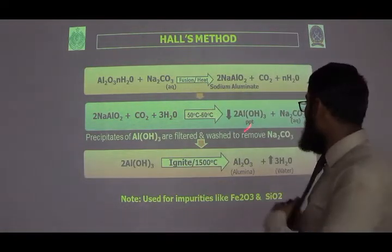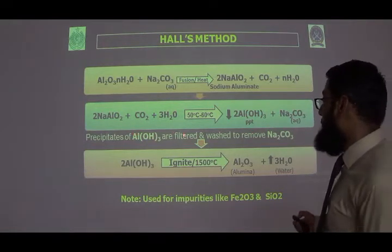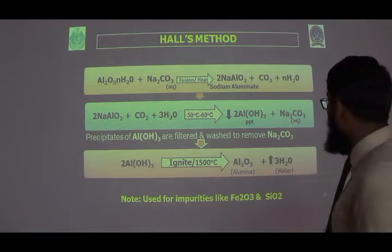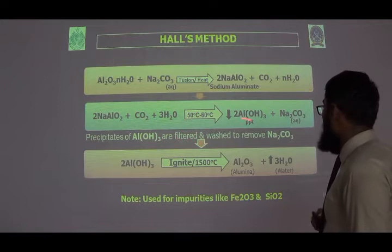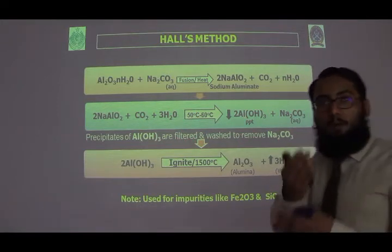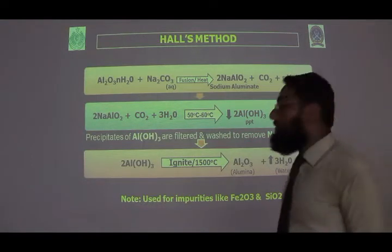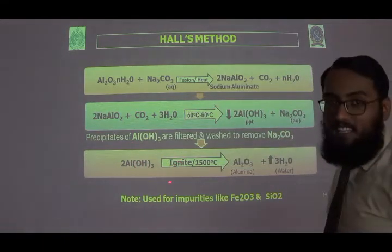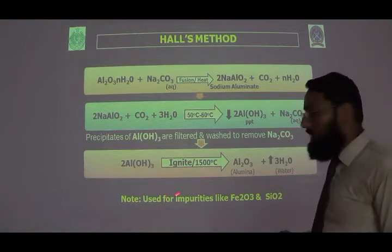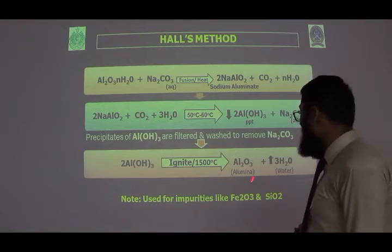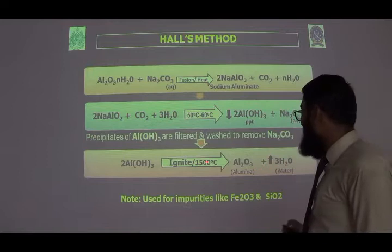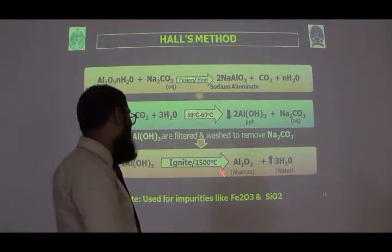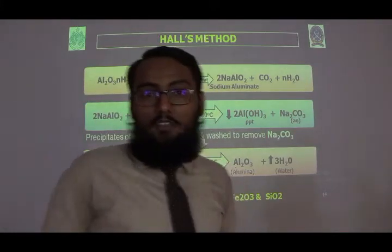The precipitate of aluminium hydroxide is filtered off. Sodium carbonate, being soluble in water, remains in solution and is separated. The filtered aluminium hydroxide precipitate is then ignited at 1500 degrees centigrade. At this high temperature, aluminium hydroxide converts to aluminium oxide plus water, and the water evaporates. This is how we finally obtain pure aluminium oxide using the Hall's method.